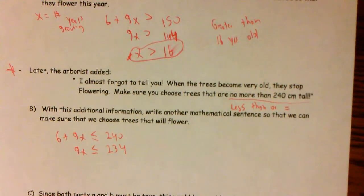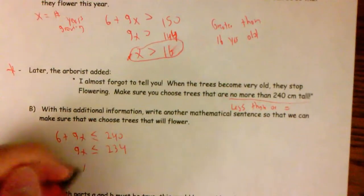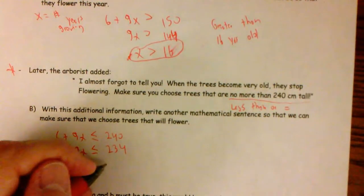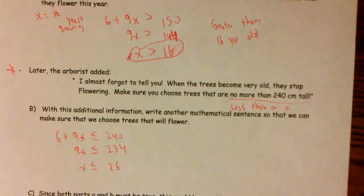So I would solve this for X by subtracting six from both sides and getting 234. And then I would do 234 divided by nine, and I would get X is less than or equal to 26.